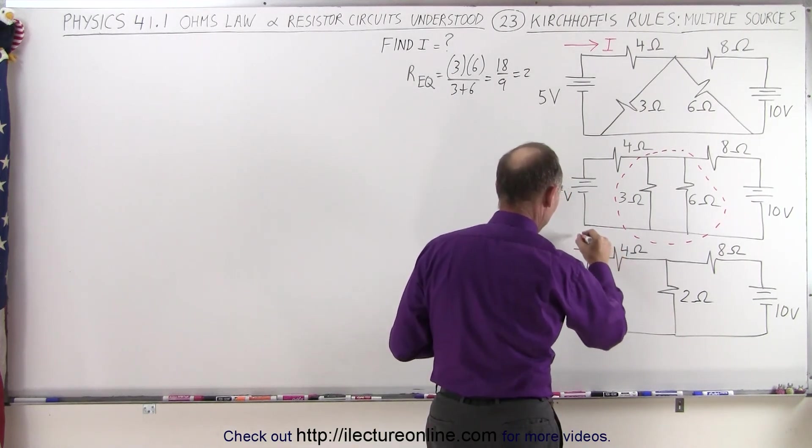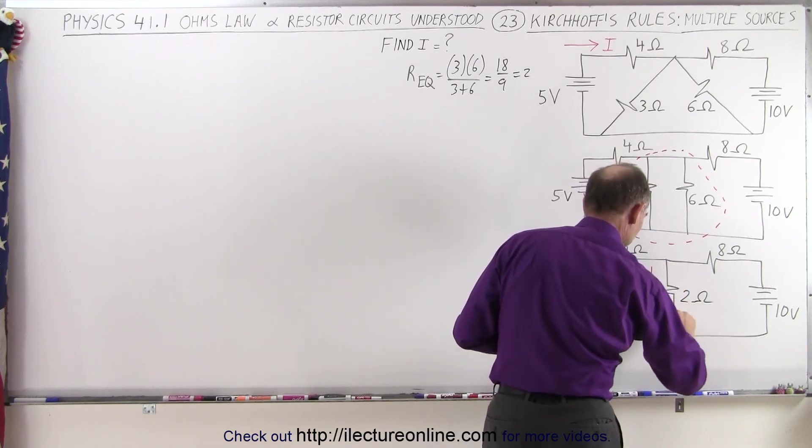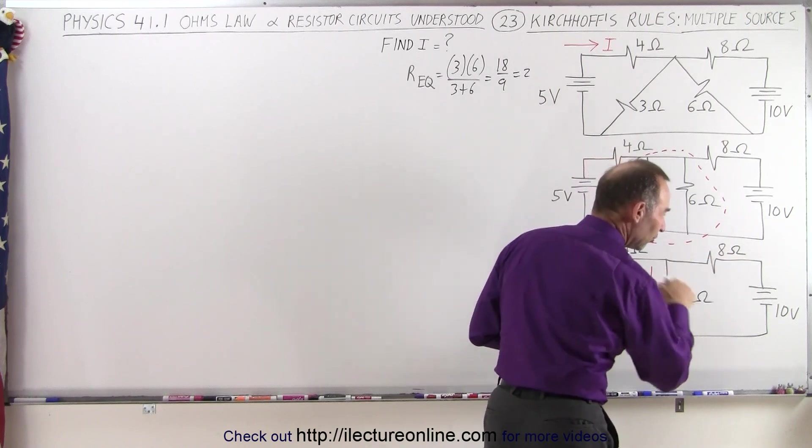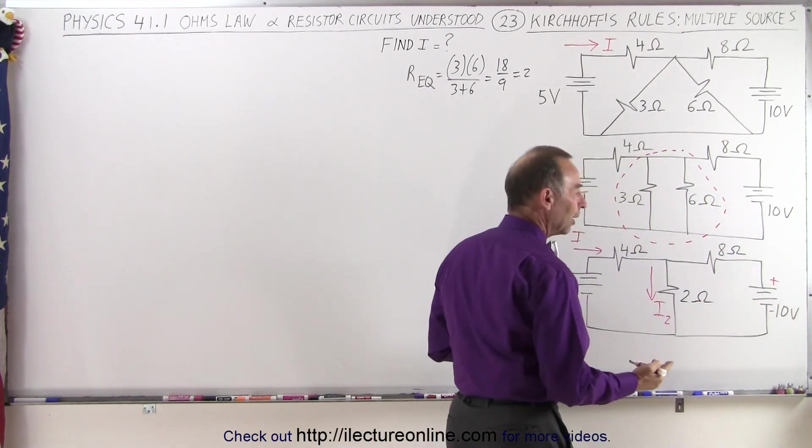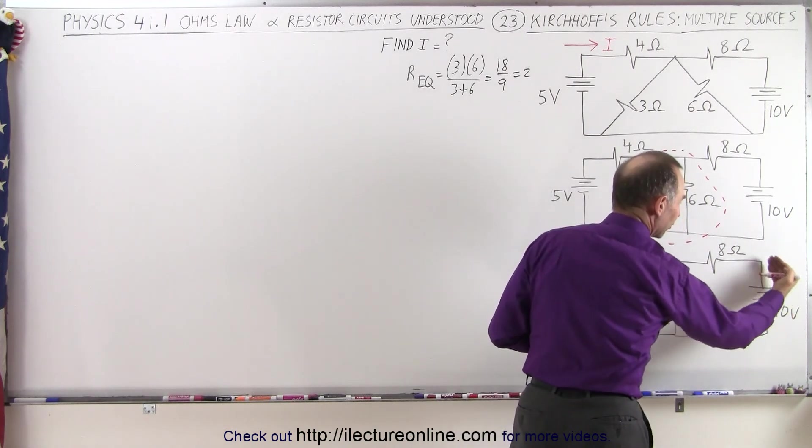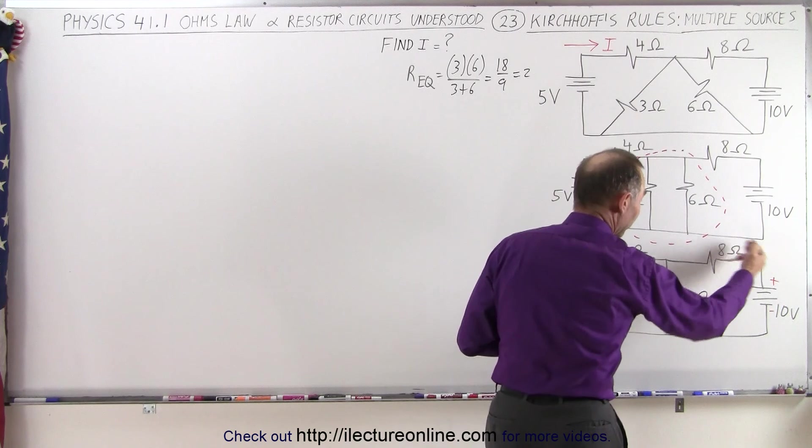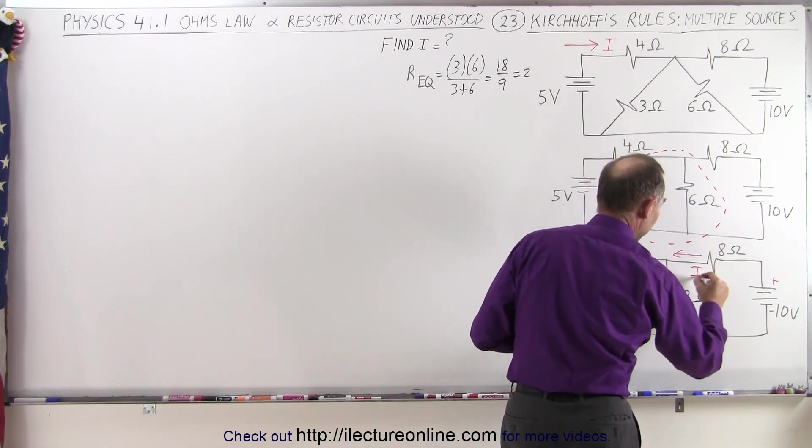So let's say we call this I1. Let's call this I2. And now for I3, instead of drawing the direction of I3 in this direction, notice this is the positive side and the negative side of the battery, which means it's probably going to push current in this direction.